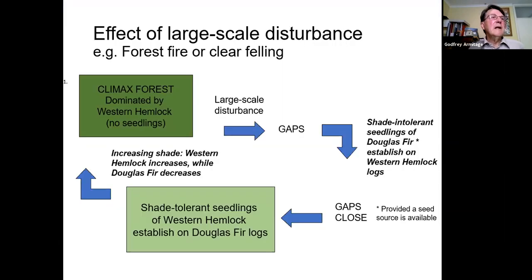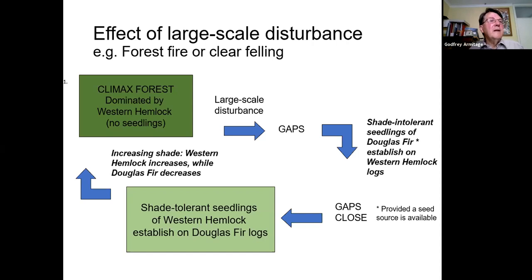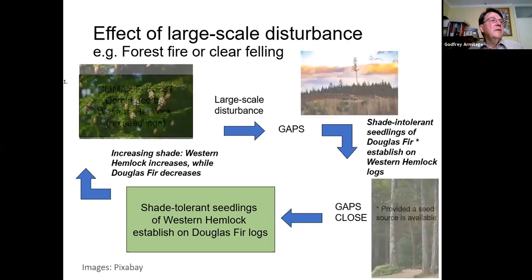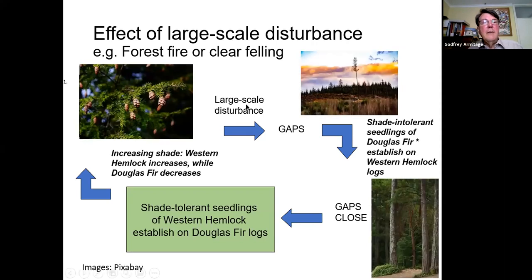Disturbance of a climax community — for example by clear-felling a forest or by forest fire — results in a gradual return to the climax state. Species whose strategy involves rapid recolonisation flourish first, then those which can compete better. For example in British Columbia, seedlings which tolerate low light levels, like western hemlock, take over again from Douglas fir, resulting in a new climax. The shade-tolerant seedlings of western hemlock can establish themselves on the broken logs of Douglas fir.